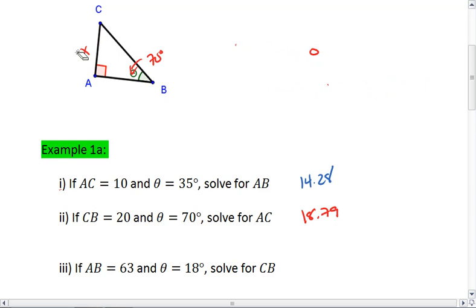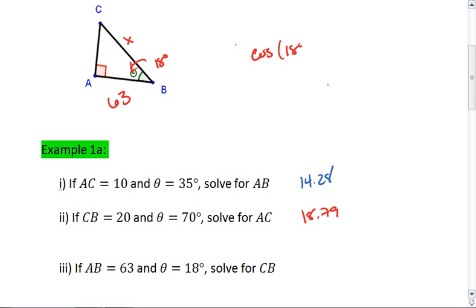Okay, now for the last one. We have AB is 63, theta is 18 degrees, and we're solving for CB. Now we use cosine. Cosine of 18 equals 63 over x. x equals 63 over cosine 18. Plug these into our calculator. We get 66.24.